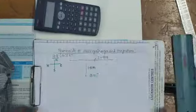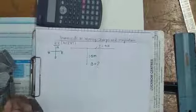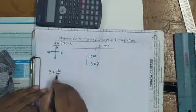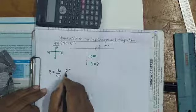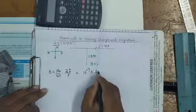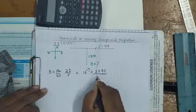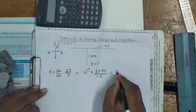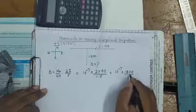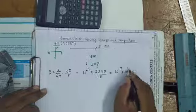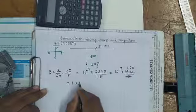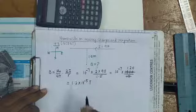Now calculating: B = (μ₀/4π)(2I/r) = 10⁻⁷ × (2 × 90) / 1.5 = 10⁻⁷ × 180 / 1.5 = 10⁻⁷ × 1800/15 = 1.2 × 10⁻⁵ Tesla, directed towards south.